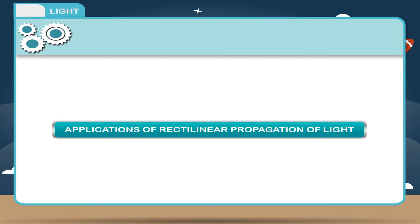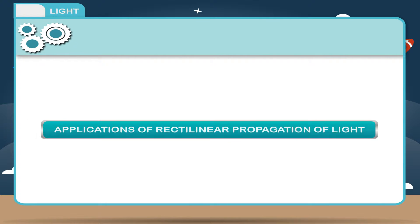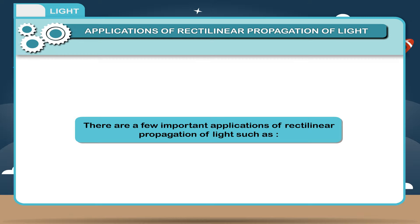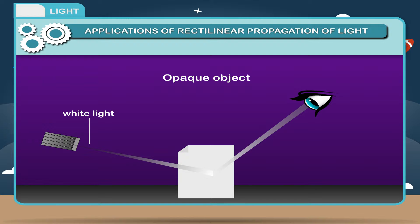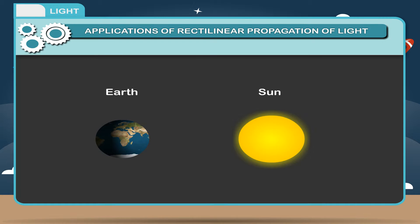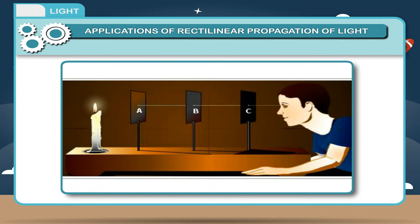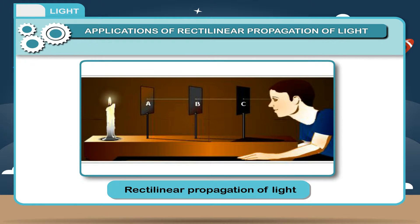Applications of Rectilinear Propagation of Light. There are few important applications of rectilinear propagation of light, such as: 1. The shadow of an opaque object is formed only when it comes in the path of light. 2. When sun's rays fall on a particular portion of the earth, that part of the earth experiences day and the rest of the planet experiences night. 3. The image in a pinhole camera forms only due to rectilinear propagation of light.